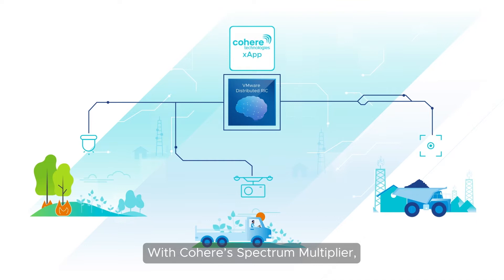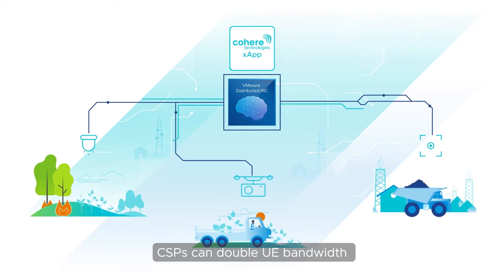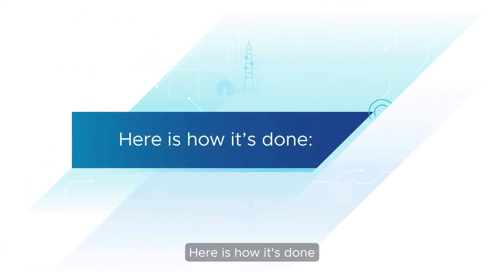With Cohere's Spectrum Multiplier, CSPs can double UE bandwidth while avoiding costly changes in handsets or infrastructure. Here is how it's done.